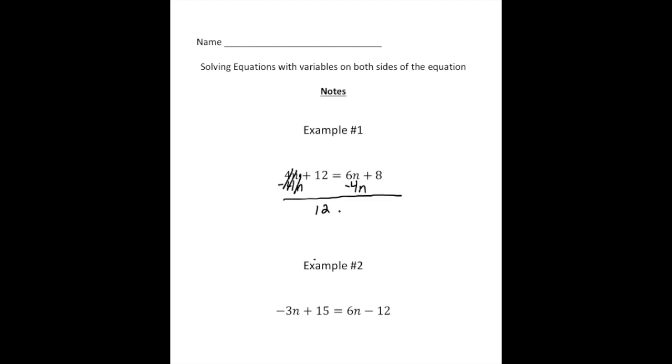So 12 is going to equal 2n plus 8 and now it's just a two-step equation. So we're going to take away 8 from both sides. That's the constant, right? So now we have 4 equals 2n. Now I'm going to divide both sides by 2 because it's a coefficient.